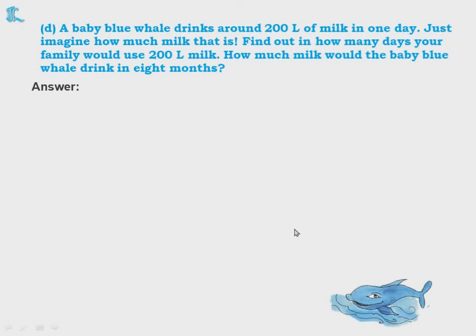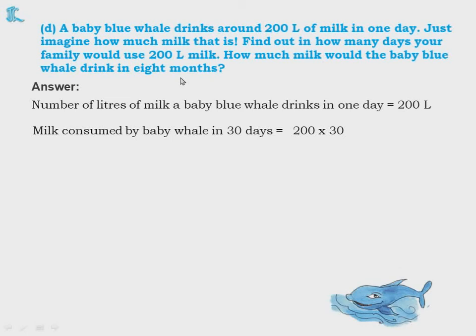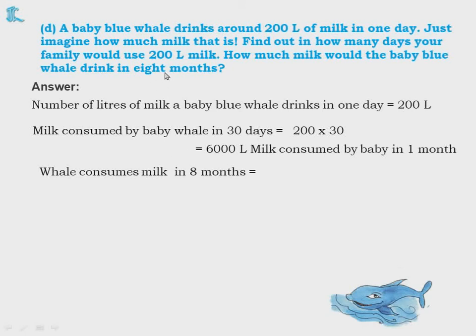A baby blue whale drinks around 200 liters of milk in 1 day. How much milk would the baby blue whale drink in 8 months? 1 month = 30 days, so in 1 month it drinks 200 into 30 = 6,000 liters. For 8 months: 6,000 into 8 = 48,000 liters. Alternative method: 8 months = 240 days; 200 into 240 = 48,000 liters — same answer.